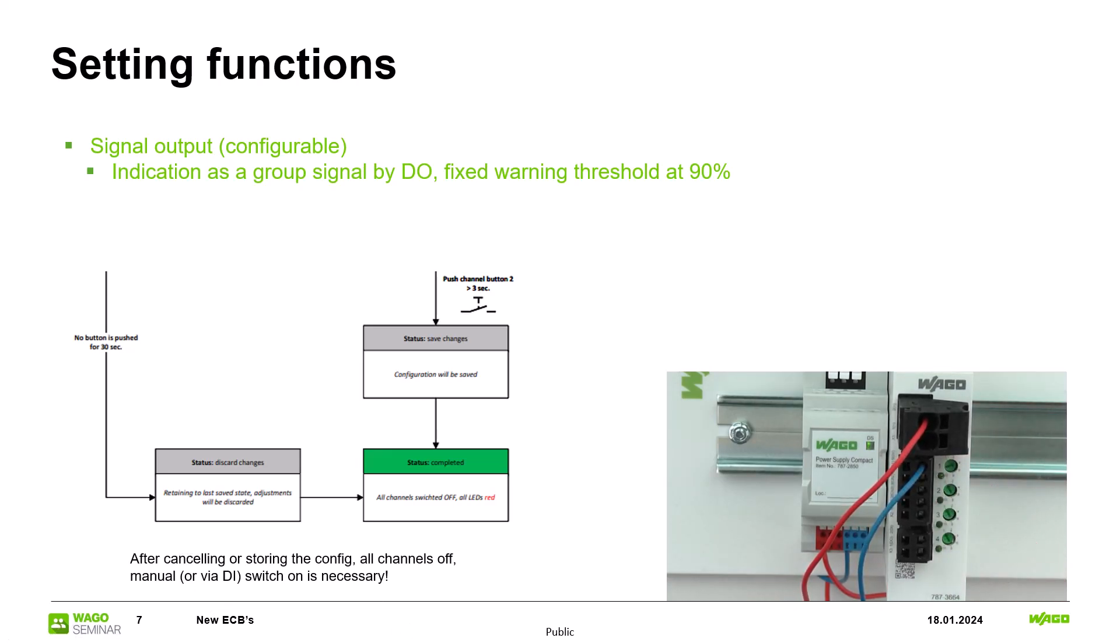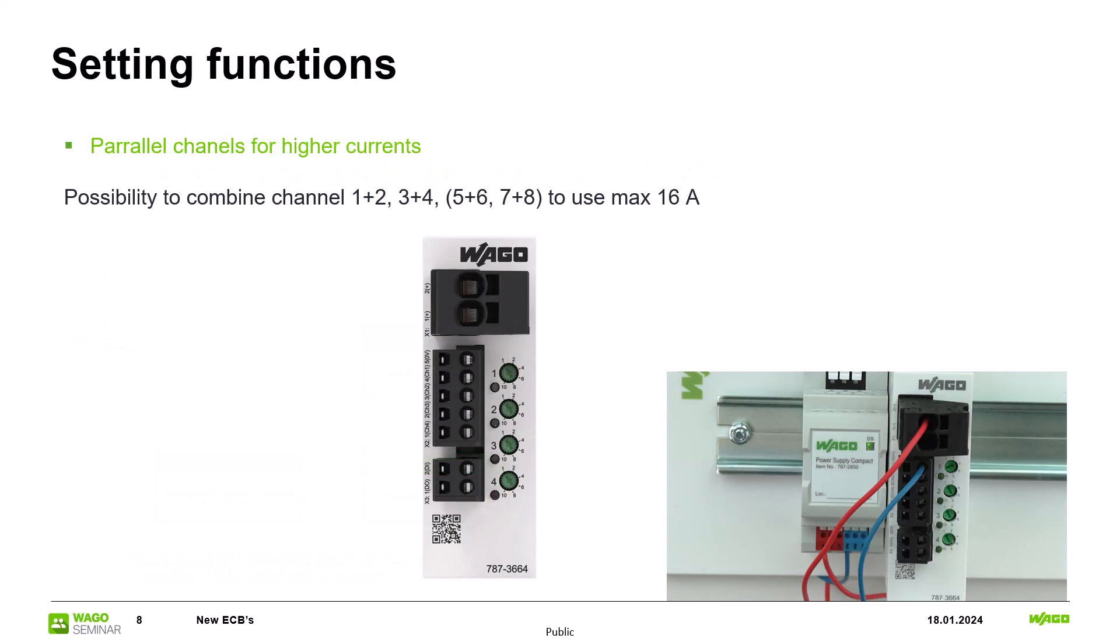Another function is to set two channels in parallel mode to increase the trip current to 16A. With a 4 channel fuse channel 1 and 2 as well as 3 and 4 can be connected together. If you have an 8 channel ECB you can also use 5 and 6 as well as 7 and 8 together.